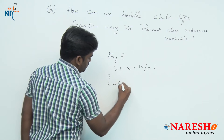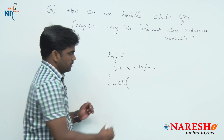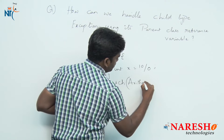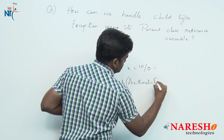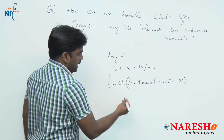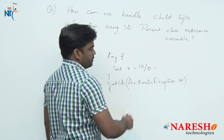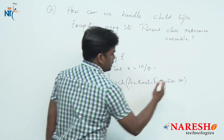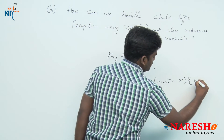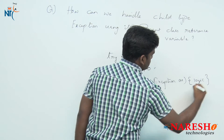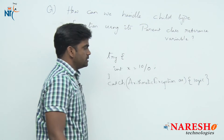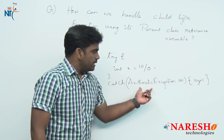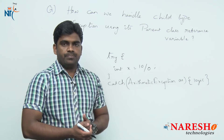In the catch block, we are collecting that exception object into a variable of type ArithmeticException and here we are handling some logic — for example, a divide by zero error. But not only ArithmeticException; with the help of its parent type also you can handle it.